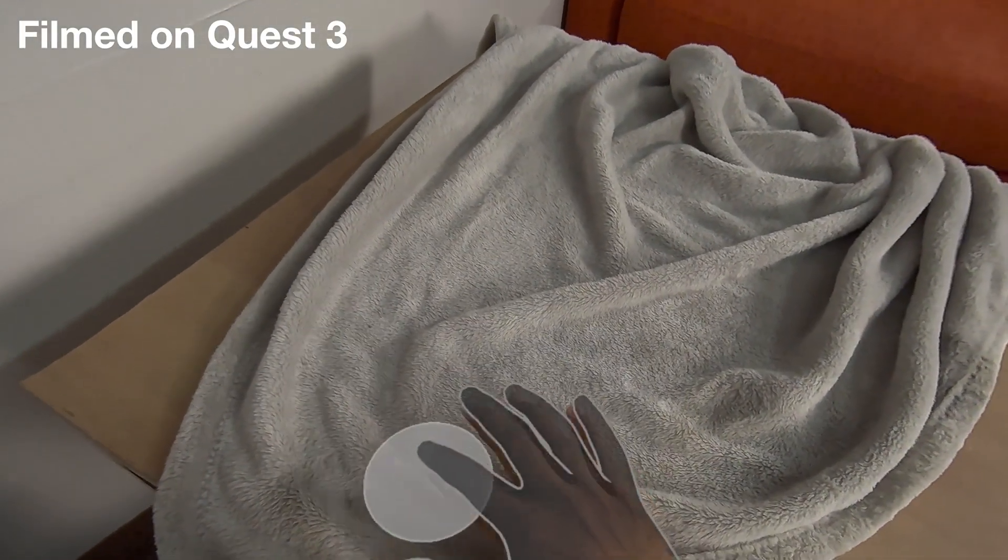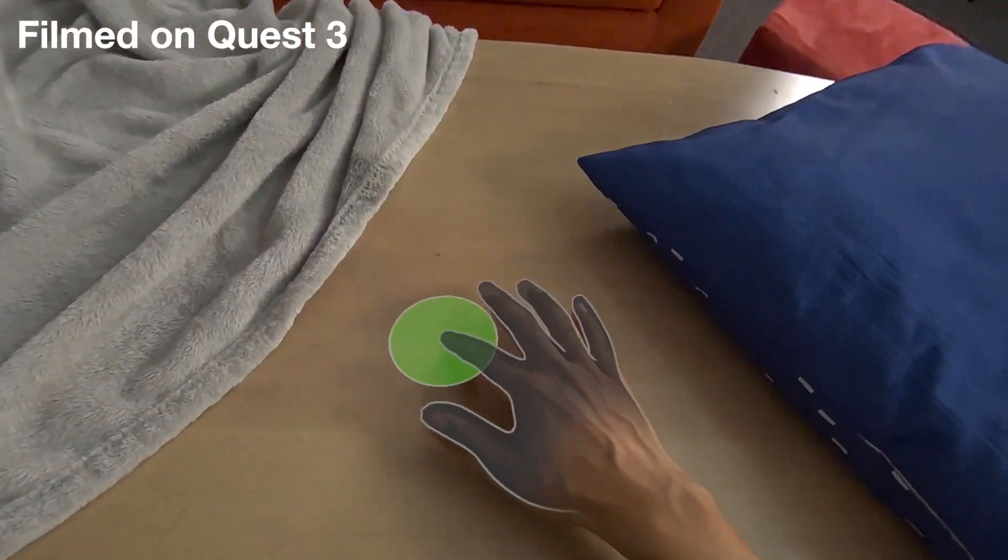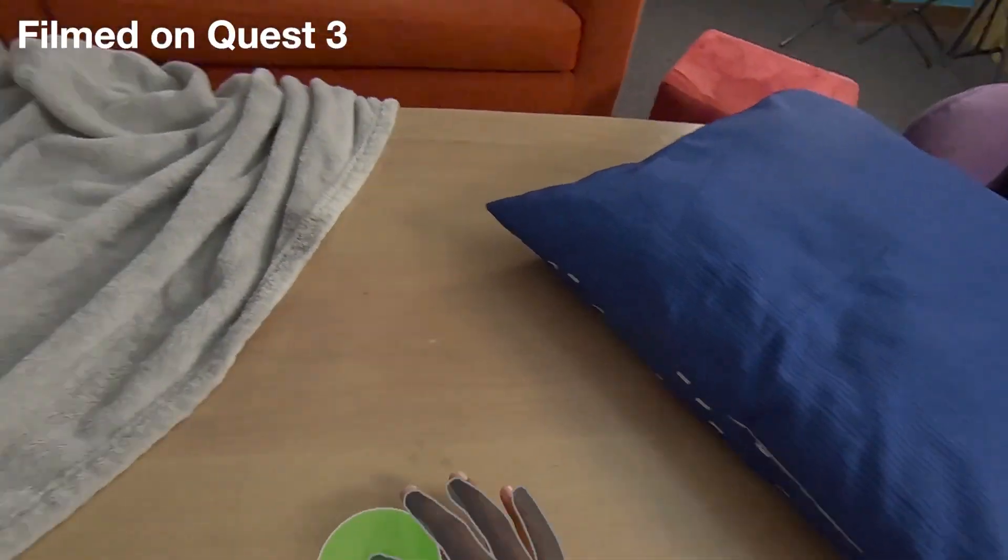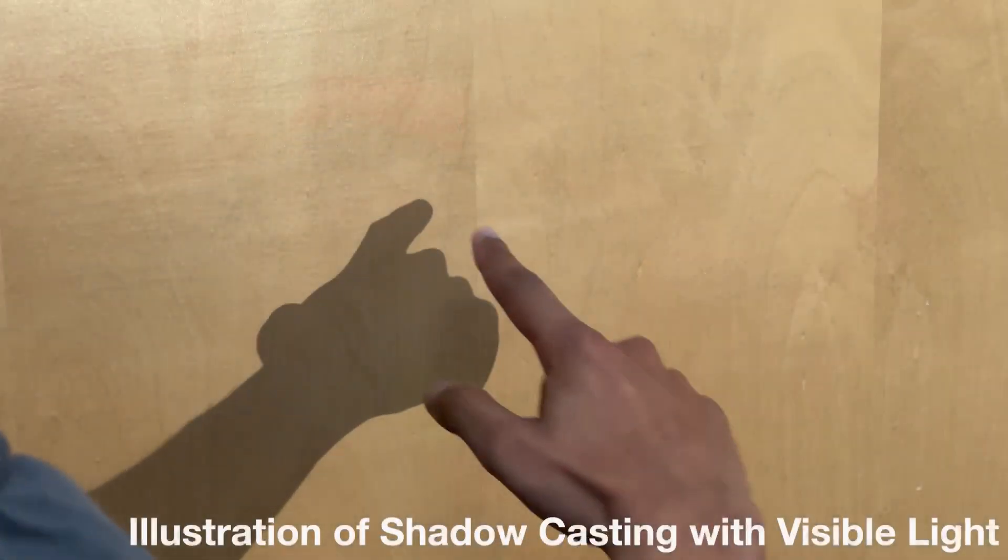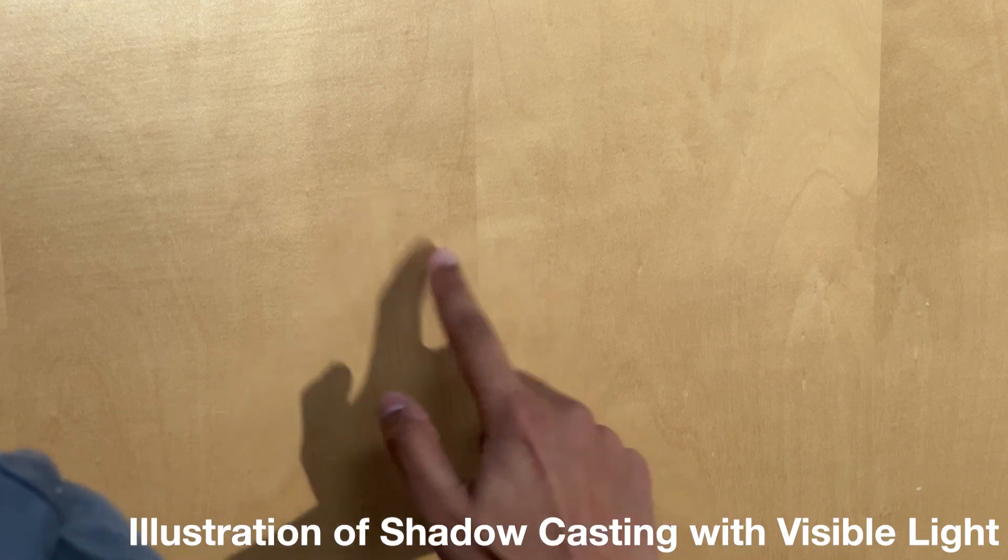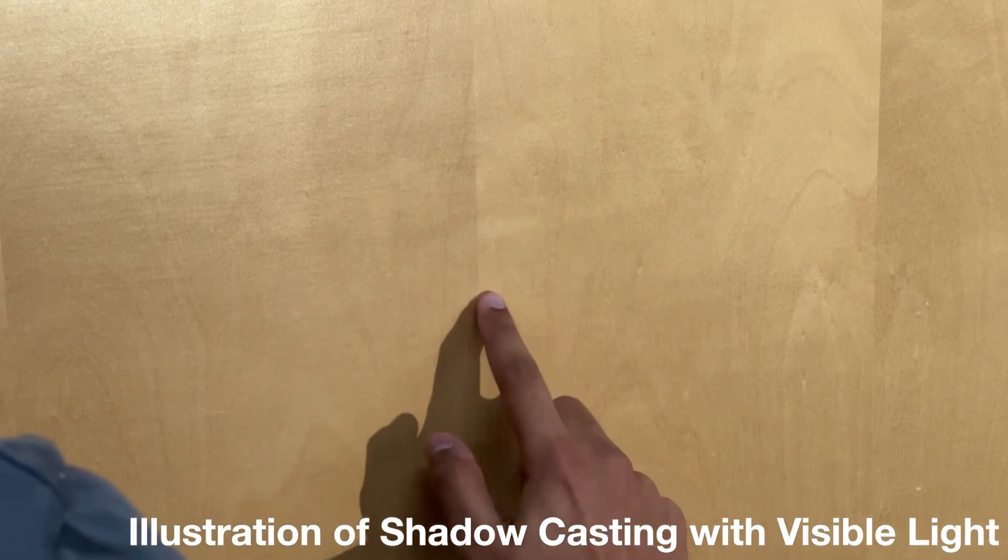In this work, we present Eclipse Touch, which meets these criteria. Our system leverages the well-known phenomena of shadow casting. By using an illumination source fixed with respect to the camera, the shadow cast by a finger inherently captures its distance from a surface, including direct contact.